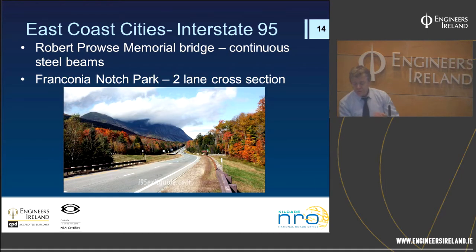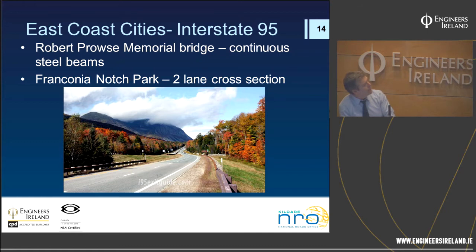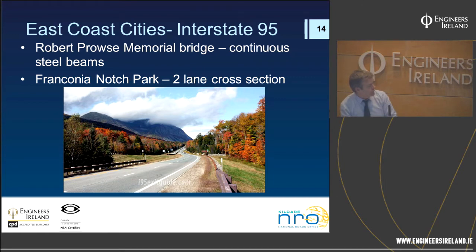Riveted plate girder bridges were largely replaced by continuous steel beam bridges in the post-war era for reasons of buildability and speed — the Robert Frost Memorial Bridge on Interstate 95 utilised these steel beams. In New Hampshire at Franconia Notch Park, the cross section was reduced to two lanes to avoid a large environmental impact on the park — north of Boston, Massachusetts — illustrating how environmental protection influenced road cross-sectional features.